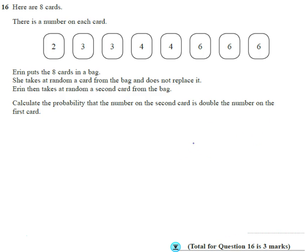Well let's think about the different combinations that we can have. So the first combination is, let's think about if I pulled out a two first. Well the number on the second card would be double, so probably if you pull out a two first it means I've got to have a four second. If I pulled a three out first, then the second card has got to be a six.